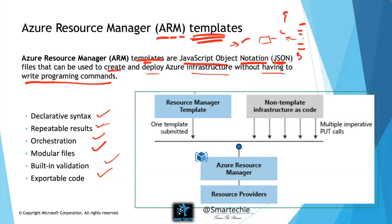Imagine you have a Resource Manager template versus a non-template infrastructure as code approach. In the non-template approach, you're writing imperative calls — maybe Python API code with multiple PUT commands with lots of code. That's the non-template code. But the code in JSON format we saw is the template — the Resource Manager template. You submit one template and everything gets built.